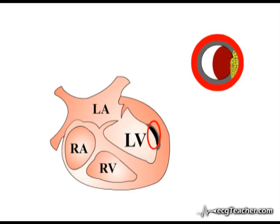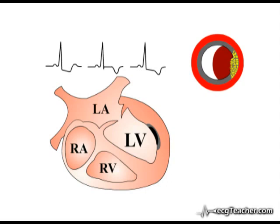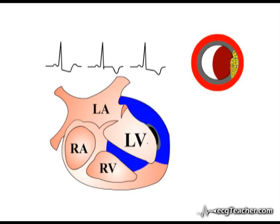The ECG changes associated with infarction in this situation are identical to those of pure ischemia: depression of the ST segment, T wave inversion, or both. Unlike infarction secondary to complete vessel occlusion, ST elevation is not observed. Also, as much of the myocardial wall under the lead remains viable and actively depolarizing, no window is created into the left ventricular cavity, so pathological Q waves do not develop.